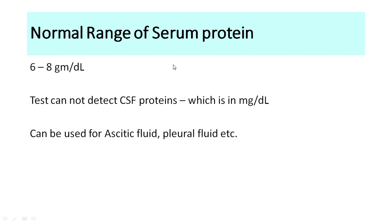The Biuret test cannot be used to detect CSF proteins because CSF proteins are in milligrams per deciliter, whereas serum proteins are in grams per deciliter. Therefore this test is not sensitive enough to pick up very low concentrations of proteins. However, the Biuret test can be used for detecting proteins in ascitic fluid and pleural fluid, where concentrations are also in the range of 6 to 8 grams per deciliter.